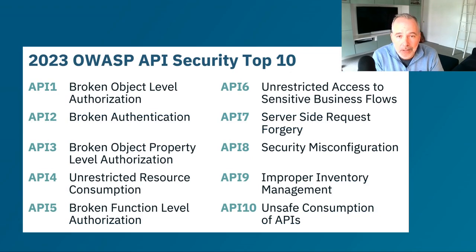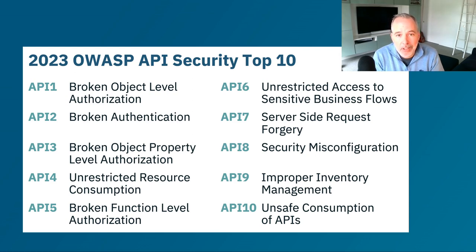At the core of the issue is what's known as a broken object level authorization flaw, and this is item number one on the OWASP API Security Top 10 list. It has been since the first OWASP came out in 2019, and it remains number one in the 2023 edition. BOLA has been number one since inception for good reason — it's really one of the most dangerous and damaging types of API vulnerabilities, and one of the most frequent that result in significant breaches.